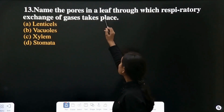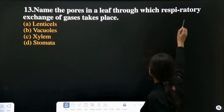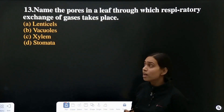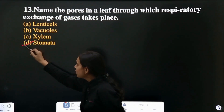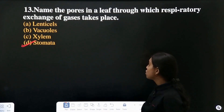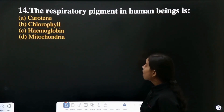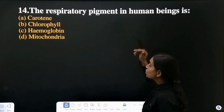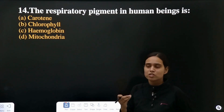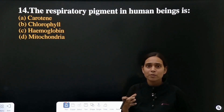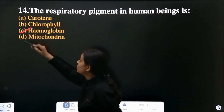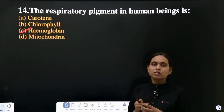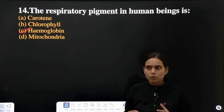Question 13: name the port in a leaf from which respiratory exchange of gases takes place. The gases exchange from stomata. Question 14: what is the respiratory pigment in human beings? It is hemoglobin. Oxygen binds to hemoglobin and circulates throughout your body.